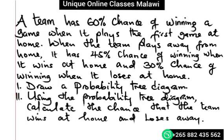Let's see the solution of this question. It's about probability. A team has a 60% chance of winning a game when it plays the first game at home, and when the team plays away from home it has a 45% chance of winning.